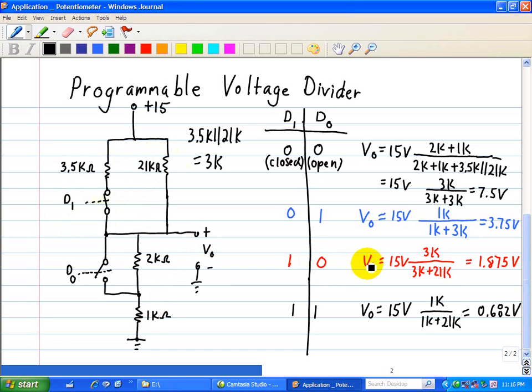So what we have in this case, V0 is 15 volts times 3k divided by 3k plus 21k, or 1.875 volts.